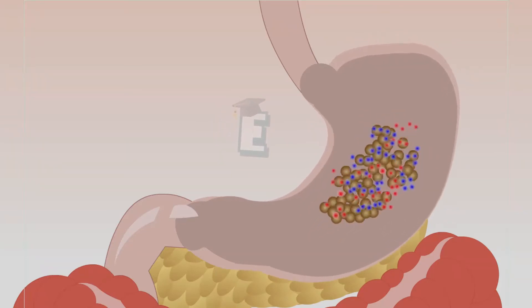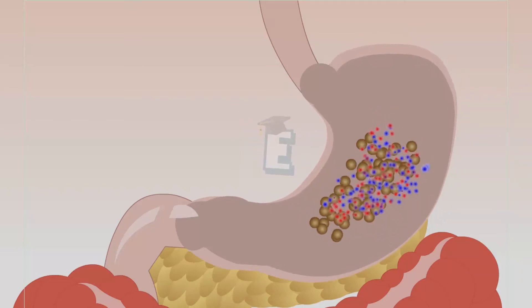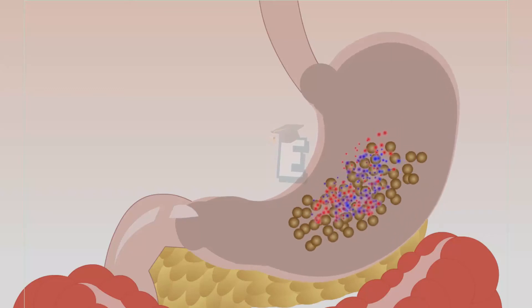Food leaves the stomach in 2 to 4 hours. After being processed in the stomach, food becomes watery liquid and moves out of the stomach to the small intestine.